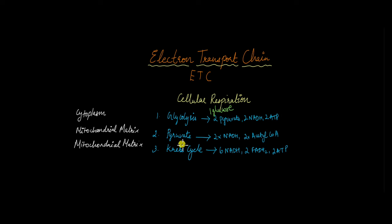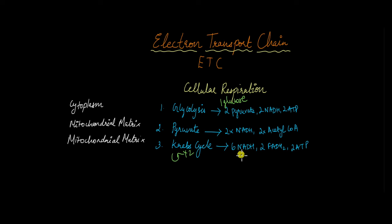The two acetyl-CoAs then enter the Krebs cycle, which essentially occurs twice. So for the two acetyl-CoAs produced, as a result of the Krebs cycle in the mitochondrial matrix, we get six NADH, two FADH2, and two ATP. So in total so far, we have 10 NADH, two FADH2, and four ATPs.